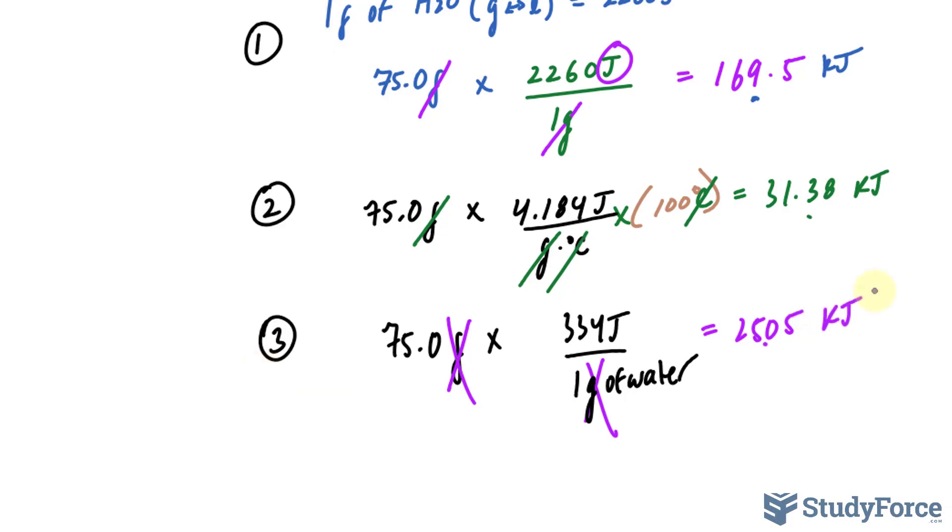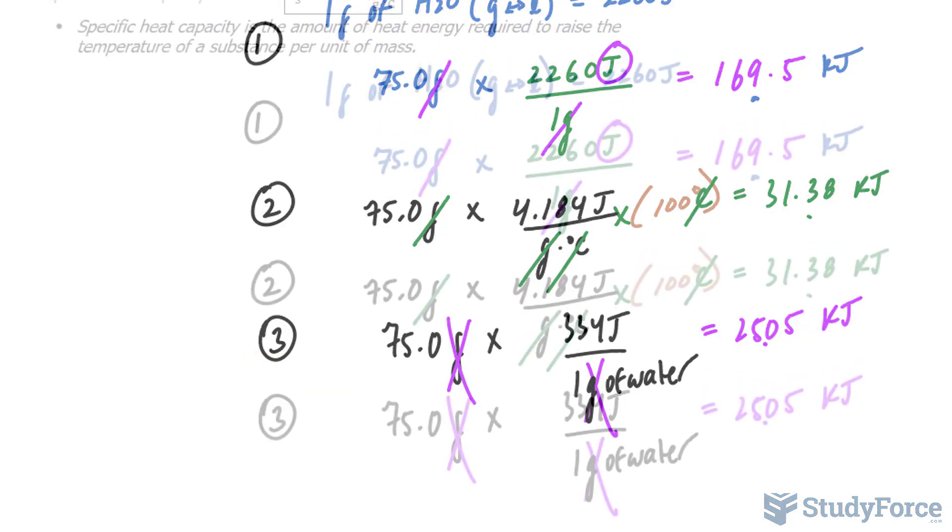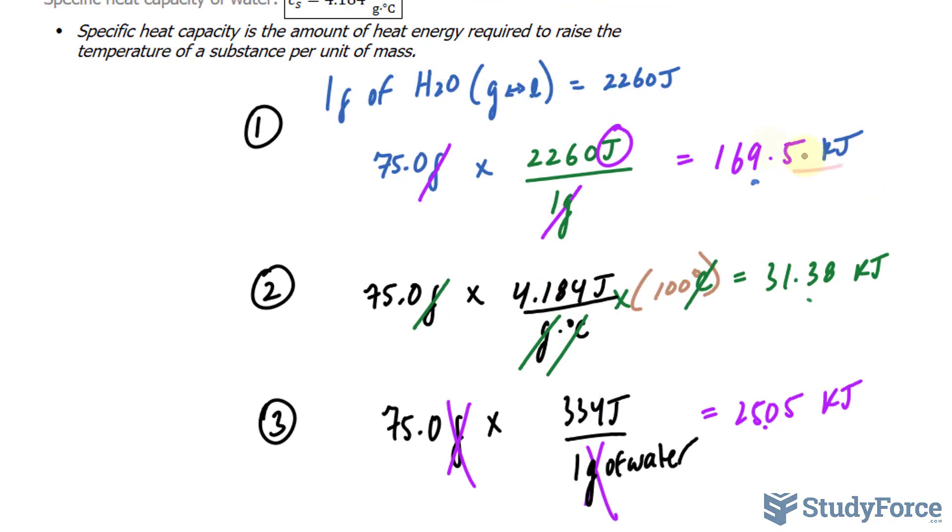And now we get to add. So before we do that, let's find the significant figures. This number rounds to 170, this number rounds to 31.4, and this number rounds to 25.1.